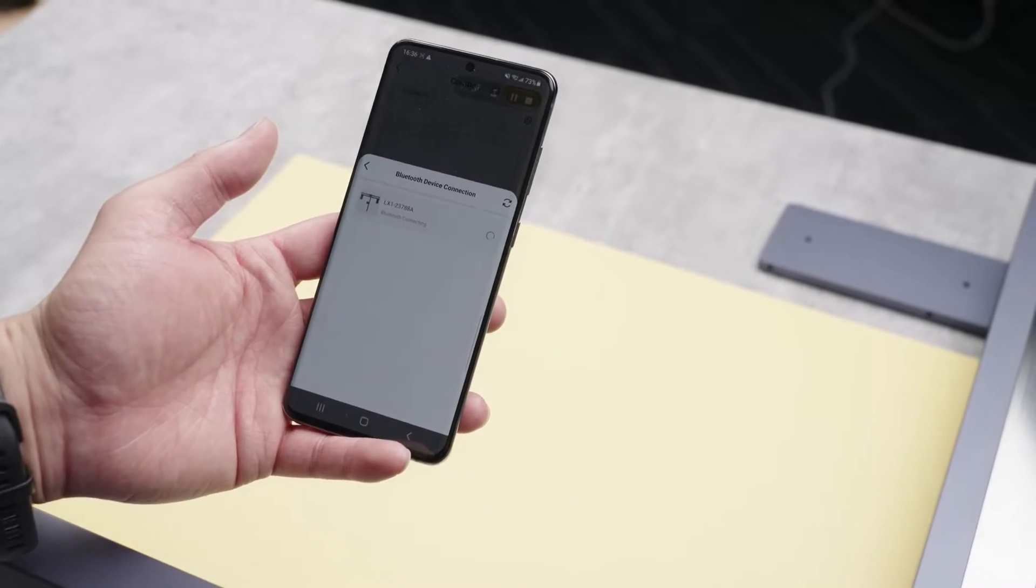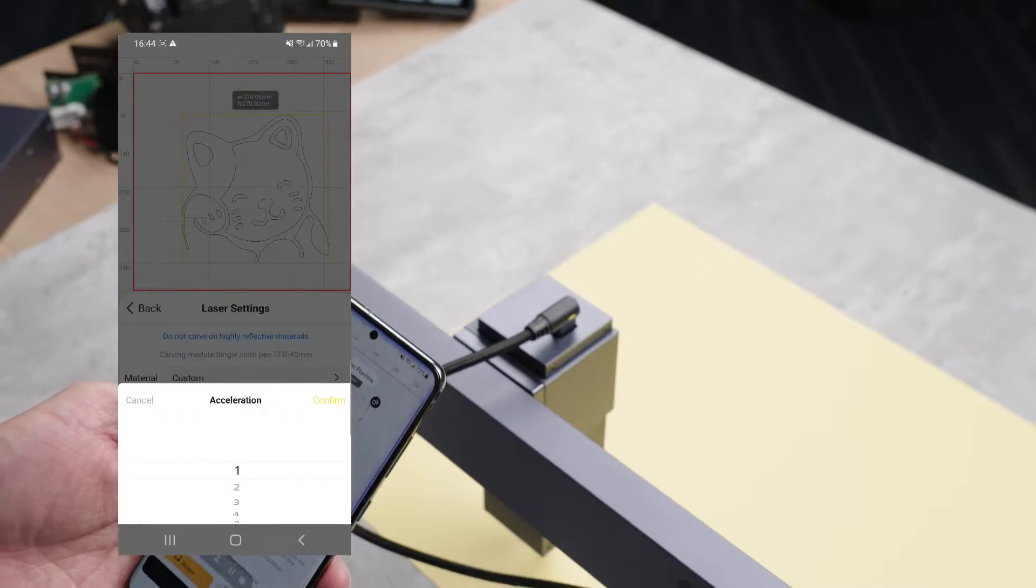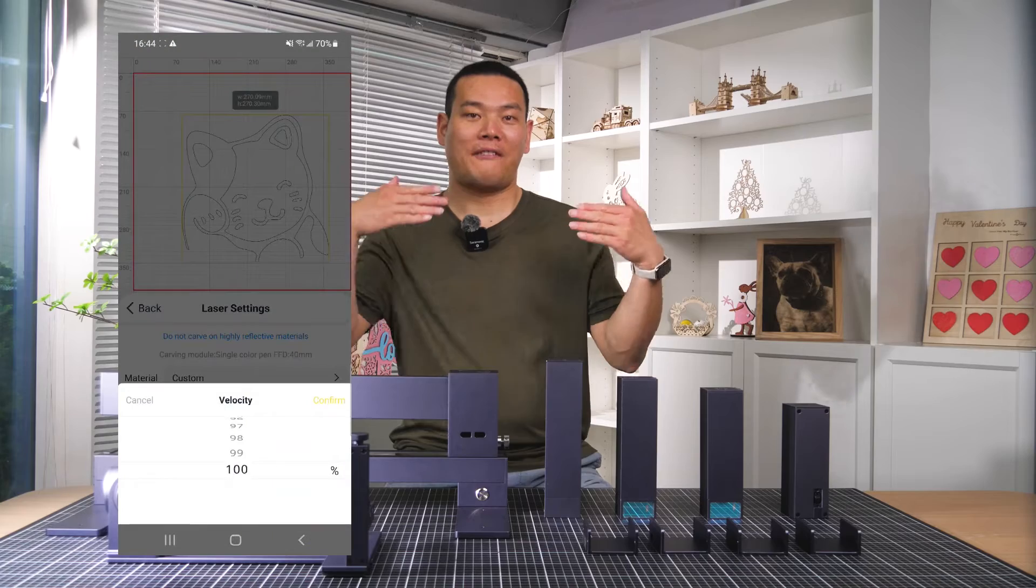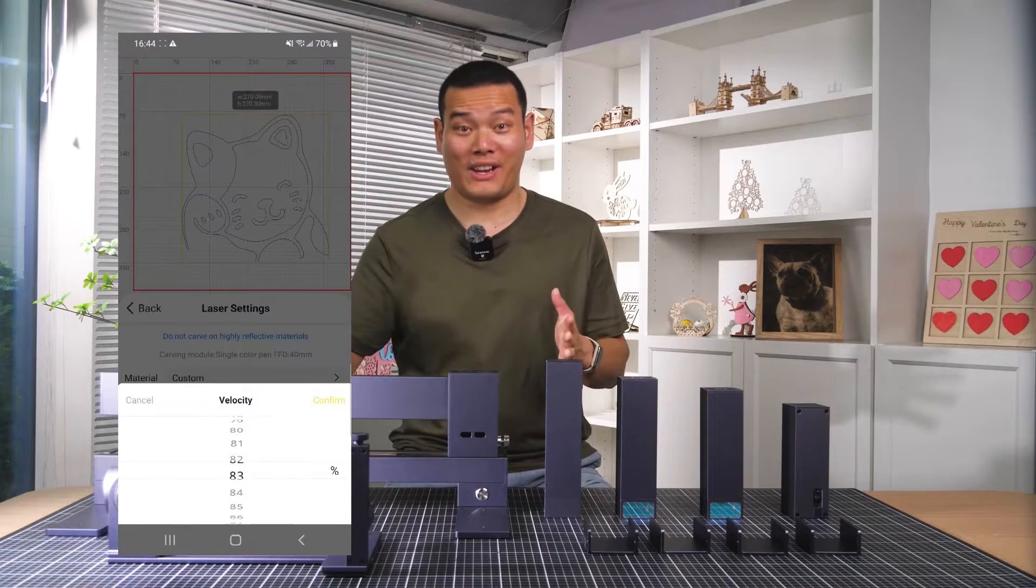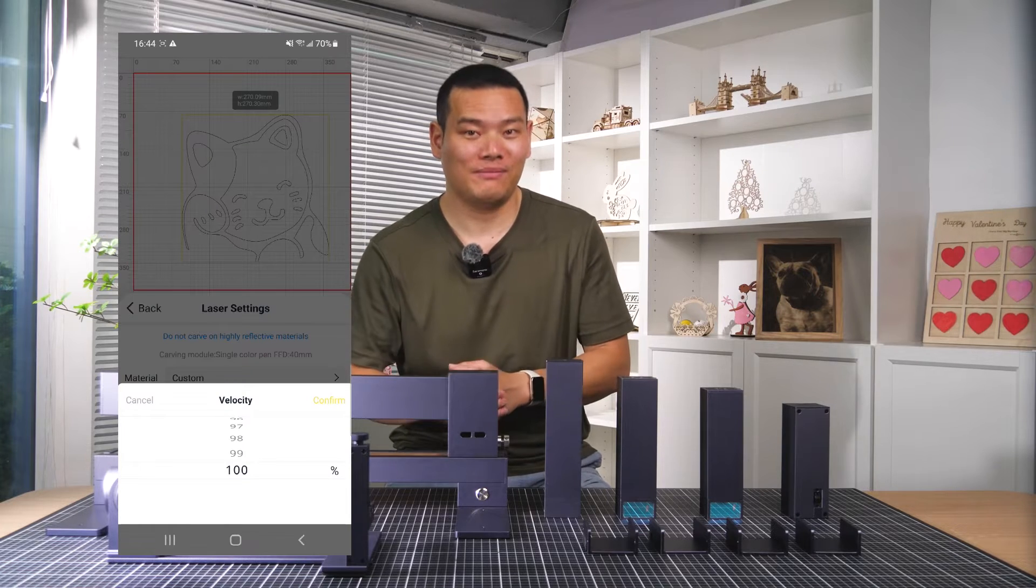After that, connect with the phone app. The Laser Picker app is undoubtedly the most powerful and user-friendly app I've ever seen for a laser engraver. I've talked a lot about it in my previous Laser Picker review videos, so I won't go into too much detail in this video.